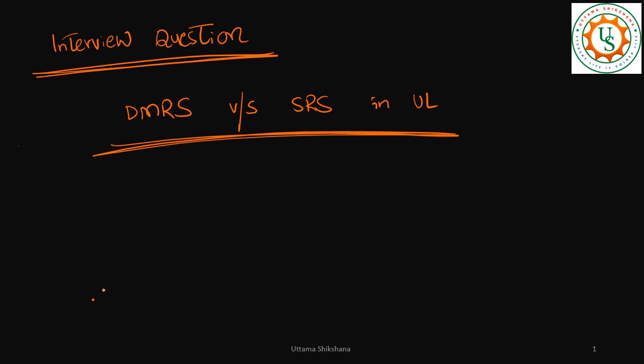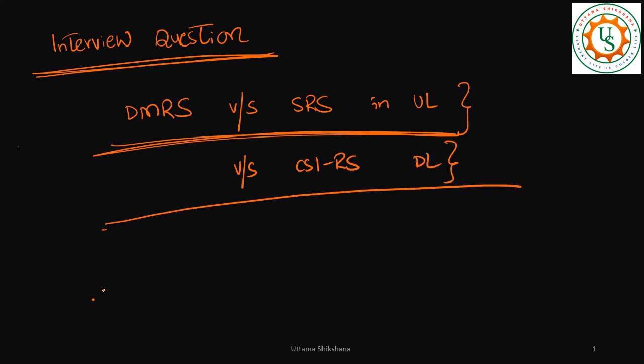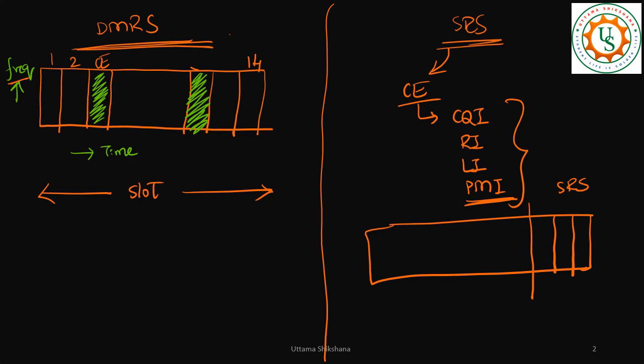Hey guys, welcome back. In this video I mainly talk about one of the important interview questions: the difference between DMRS and SRS. In other words, the question would be like — when we have DMRS in the system, then why do we need SRS? This is mainly in the uplink. This question has been asked to me by one of the viewers and it is also an important interview question. Similarly, in downlink the question is: when we have DMRS, why do we need CSI-RS? So I will answer this. First, let me take a division for DMRS and SRS.